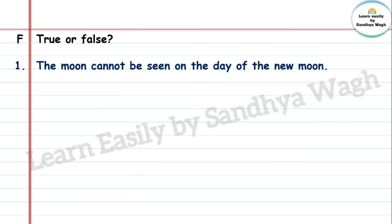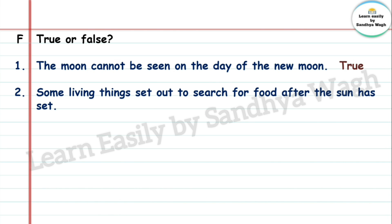True or False. 1. The moon cannot be seen on the day of the new moon — True. 2. Some living things set out to search for food after the sun has set — True.